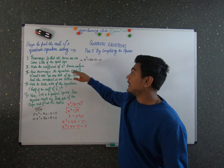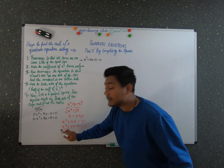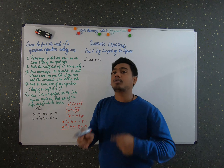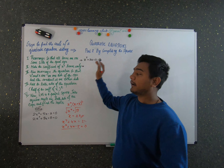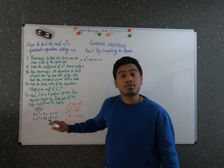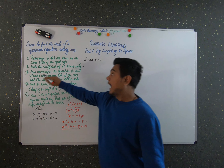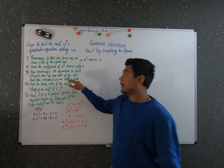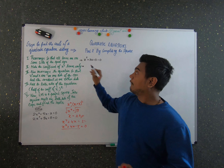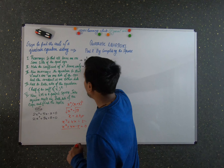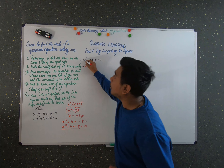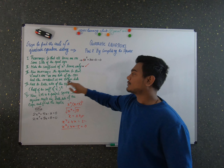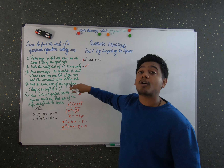The next step is to make the coefficient of the x squared term unity. In this example it is already 1, but in other problems you may see a coefficient of 2, so you divide the entire equation by that coefficient. The next step is to rearrange the equation so that x squared and x terms are on one side and the constant is on the other side.